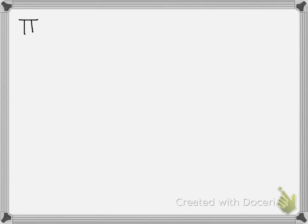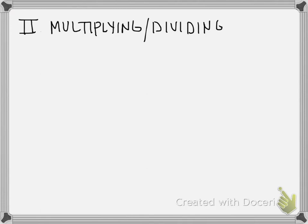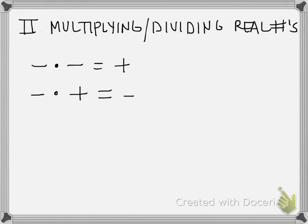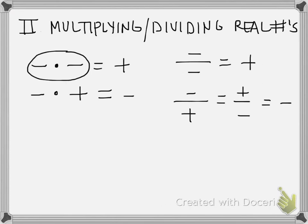So when we multiply or divide real numbers: a negative times a negative is always going to give me a positive. If I multiply a negative times a positive, that's going to give me a negative. A negative divided by a negative is a positive. A negative divided by a positive or a positive divided by a negative is always going to be a negative. So if we have an even number of negatives multiplied together, we will always get a positive answer — for example, a negative times a negative gives you a positive, and if I had four negatives multiplied together it would still give me a positive answer.